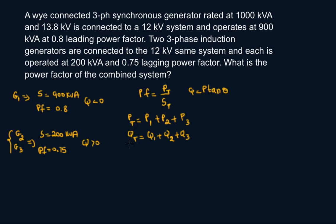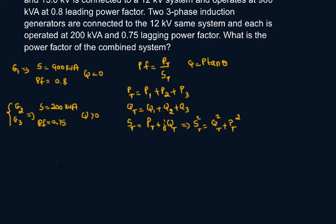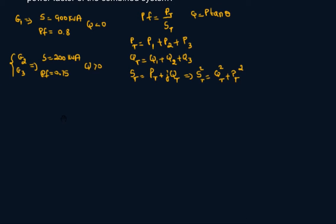Total reactive power would also be Q1 plus Q2 plus Q3. What you're not going to do is add your apparent power. S total would not equal S1 plus S2 plus S3, that's a no-no. S total squared equals Q total squared plus P total squared. I'm just laying down the formulas and finding my way out of this.